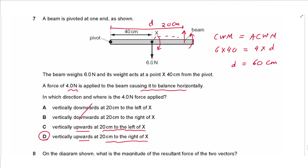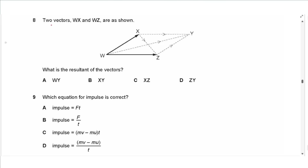Question 8: Two vectors WX and WZ are shown. The resultant is the diagonal of the parallelogram in the same direction as the original forces, which is WY. The answer is A.